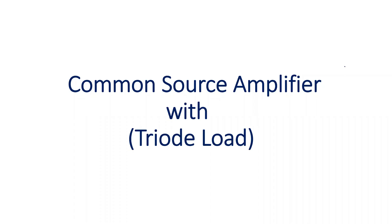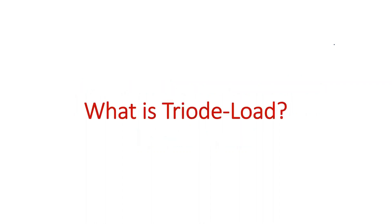In this video, I'm going to discuss the common source amplifier topology with triode load. In previous videos in this series, we discussed various loads for three different configurations. Now I'm going to use the triode load. So what is the triode load? When the M2 device, which was previously acting as a current source, active load, is now going to act as a triode load — when it is acting in the deep triode region.